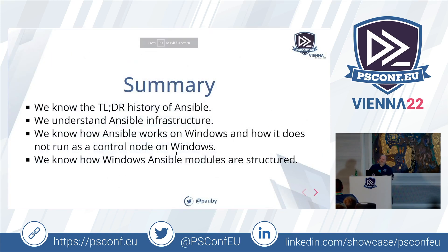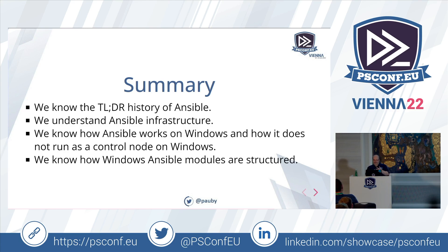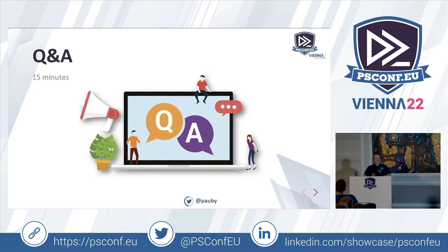Summary: we covered the history of Ansible from 2012 to IBM's 2019 acquisition. We understand the Ansible infrastructure and how it communicates with Windows hosts via WinRM and OpenSSH. We know Ansible doesn't run as a control node on Windows due to those 'unixisms', but we have WSL, Linux VMs, Docker containers, and Cygwin as options. And we know how Ansible Windows modules are structured — the folder layout, the spec hash table, and the ExitJson call at the end.